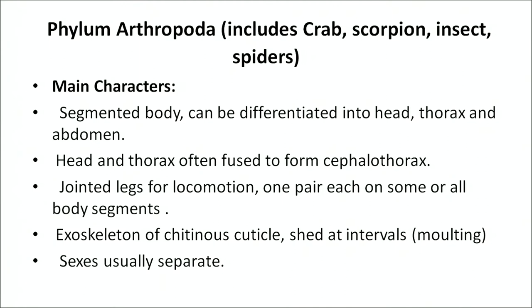Arthropoda is further divided into four classes: first is Crustacea, second is Myriapoda, third is Insecta, and fourth is Arachnida. Now we will discuss all these classes one by one in detail.